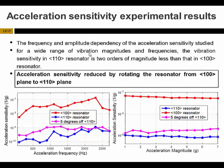To find the dependency of acceleration sensitivity on vibration frequency and vibration magnitude, we varied both and measured the acceleration sensitivity. We still observe two orders of magnitude difference between the 1-0-0 and 1-1-0 resonators. In addition, rotating the resonator orientation from 1-0-0 toward 1-1-0 decreases acceleration sensitivity — the same trend we obtained for nonlinearity — confirming a correlation between nonlinearity and acceleration sensitivity of silicon-based MEMS resonators in different orientations.